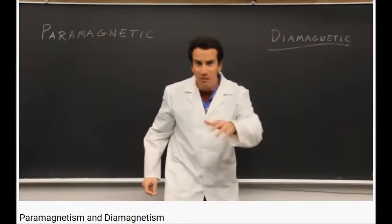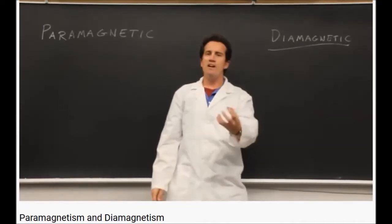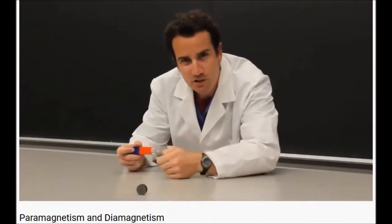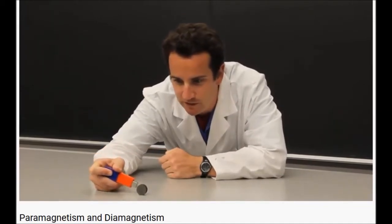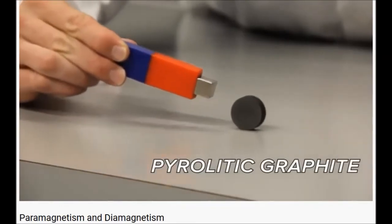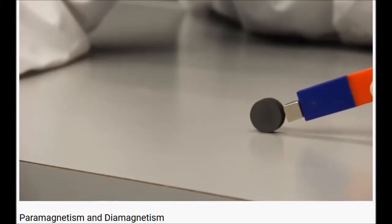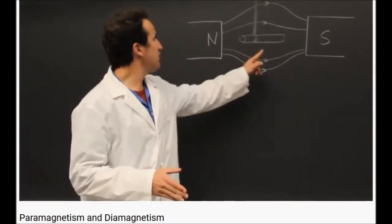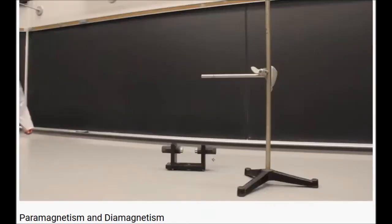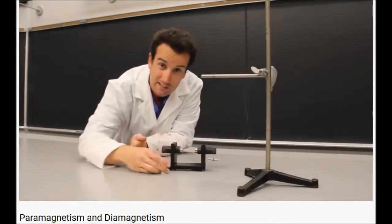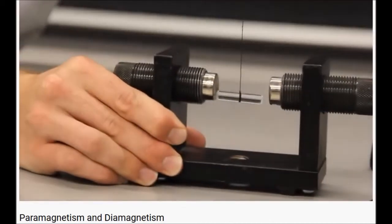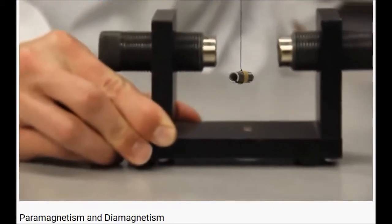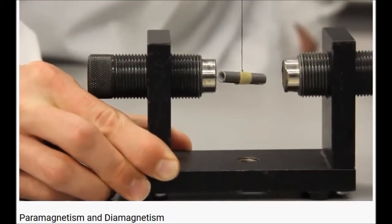Gadolinium oxide and cupric sulfate are good examples of paramagnetic substances — cupric sulfate is a salt that can be picked up by a magnet. Diamagnetic materials are exactly the opposite — they are always repelled. An important example is pyrolytic graphite, which is repelled by a magnetic field at both the north and south end. To check whether an object is diamagnetic or paramagnetic, see how it aligns in a magnetic field. Diamagnetic objects like glass twist to avoid magnets, while aluminum rotates into the field.